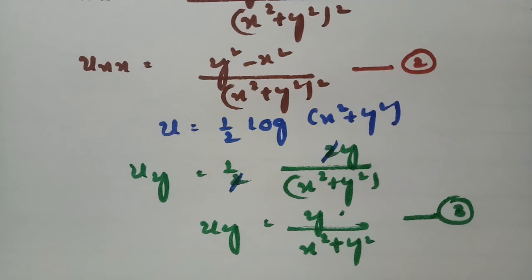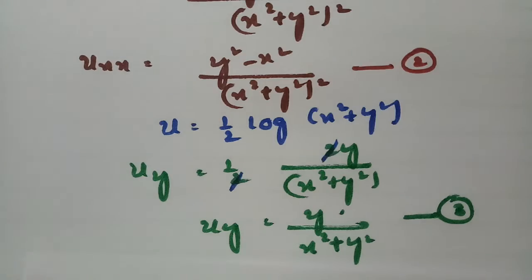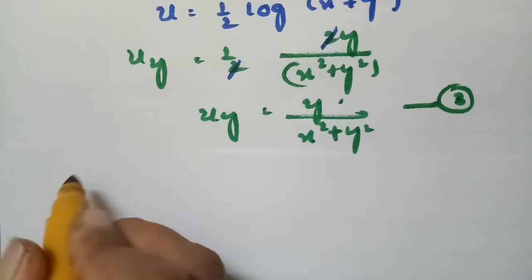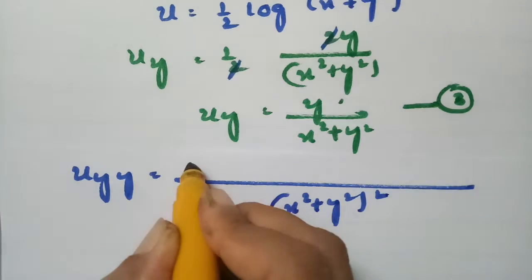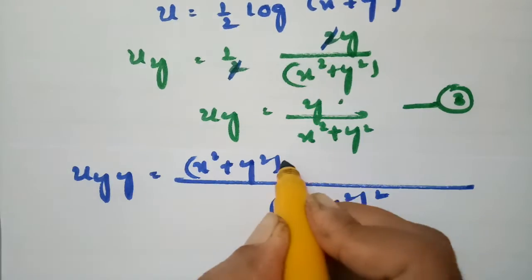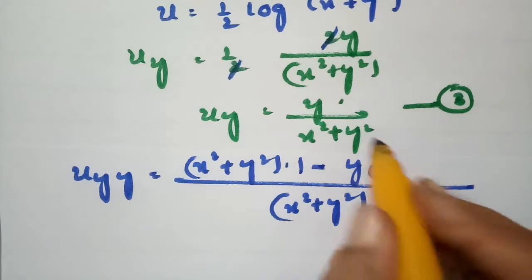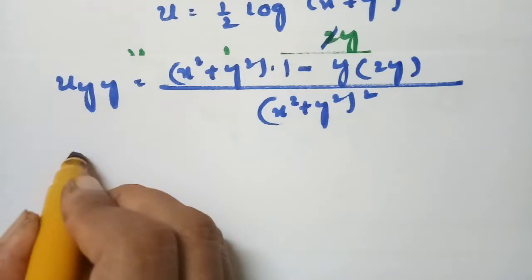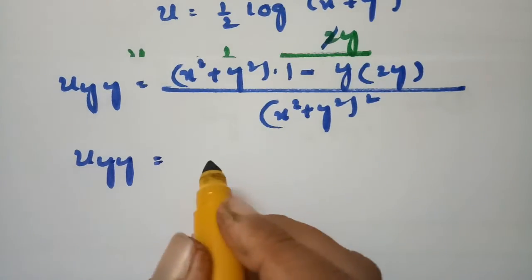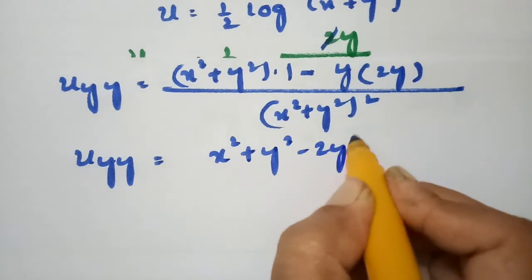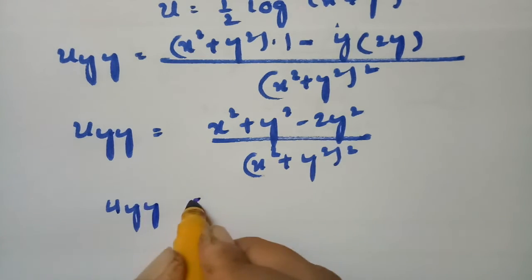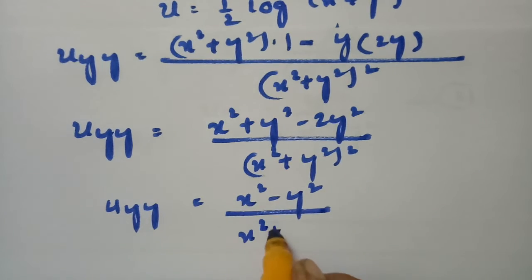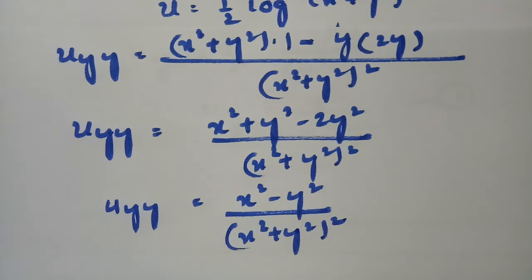Now I take the second derivative with respect to y using the quotient rule: uyy = [(x²+y²)·1 − y·2y] / (x²+y²)². Simplifying, uyy = (x²−y²)/(x²+y²)². This is equation number 4.